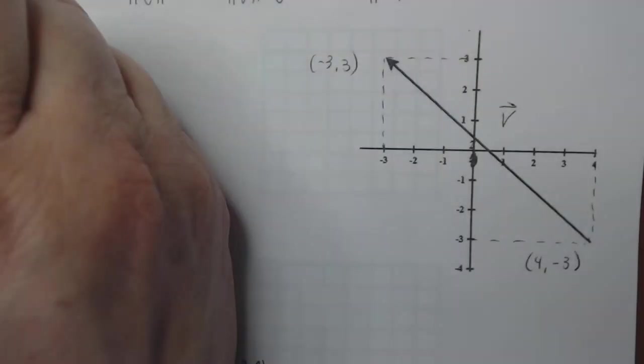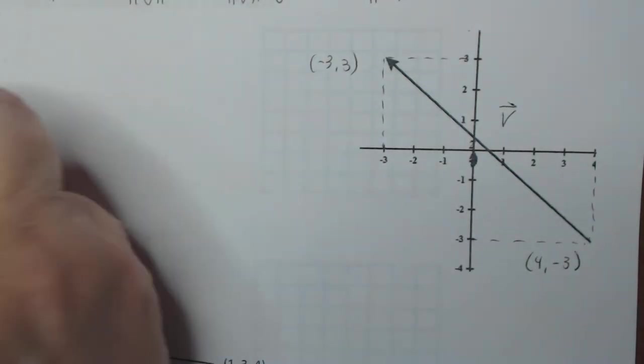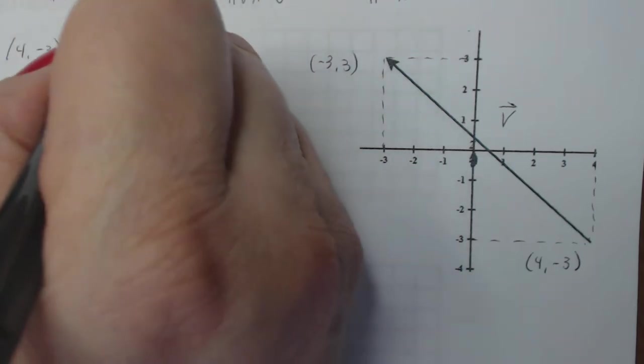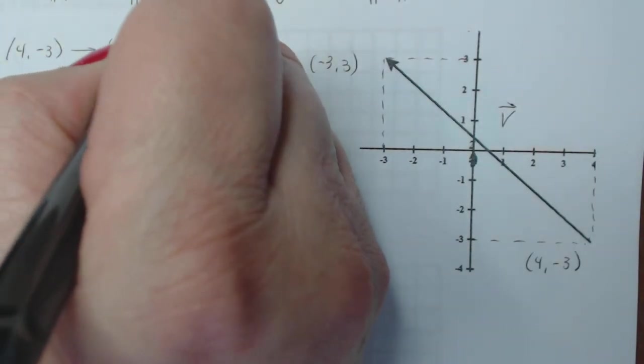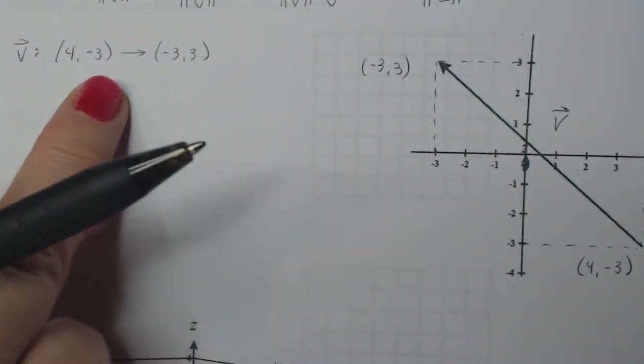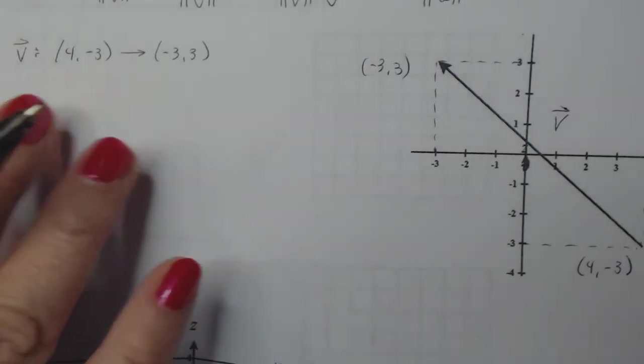So I do the same setup. I'll call this vector V again. So vector V will be from (4, -3) to (-3, 3). Now again, we're beginners, so we start with stuff that helps us remember the way that we do things. And then eventually we can get away from that. But right now, just do it. It's not going to kill you.